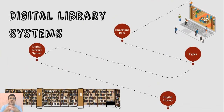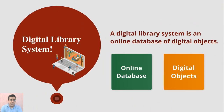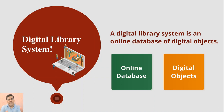The next thing we need to understand is the digital library system — that's actually our real concern. A digital library system is an online database of digital objects. So here we have two things: online database and digital objects.